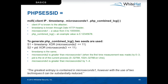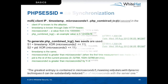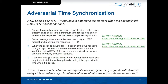The two attacks they described were adversarial time synchronization and request twins — both of which approximate the exact time down to the microsecond on the server. Let's move on to slide 50, and I'll describe how this works.